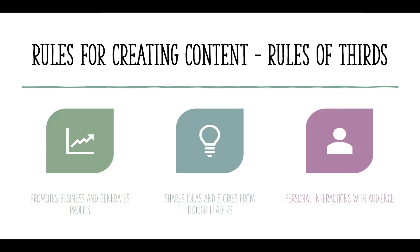When creating content, there is also the rule of thirds — you want to split your campaigning into three categories: one promotes the business and generates profit; one shares ideas and stories through leadership or influencers; and one promotes personal interactions with the audience, which is where influencing through social media comes in as well.